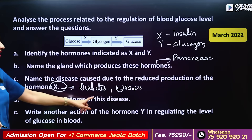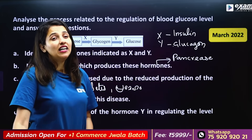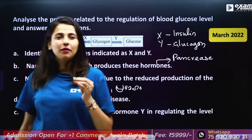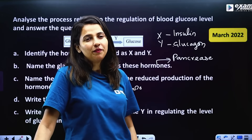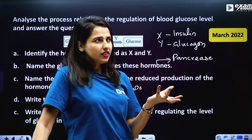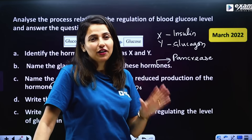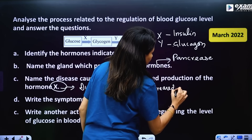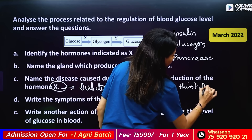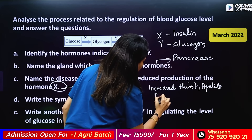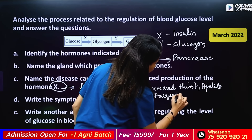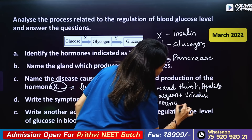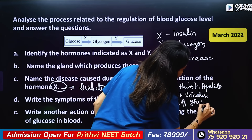Write the symptoms of this disease. Symptoms include increased appetite, frequent urination, and presence of glucose in the urine.